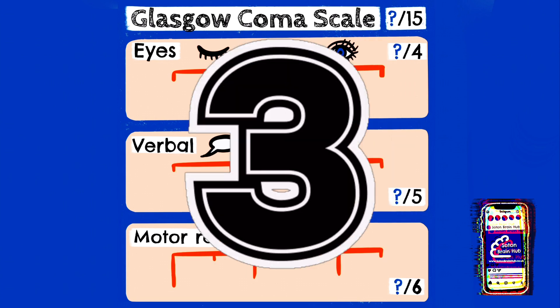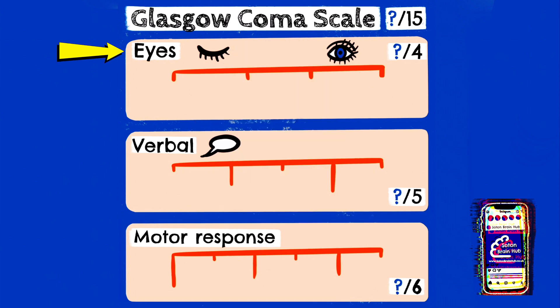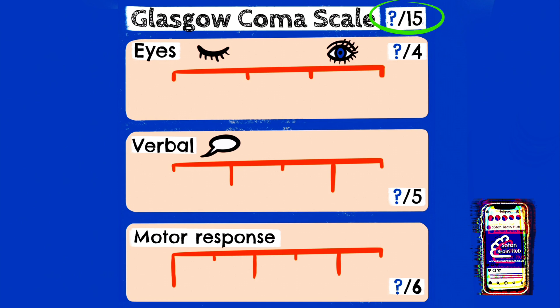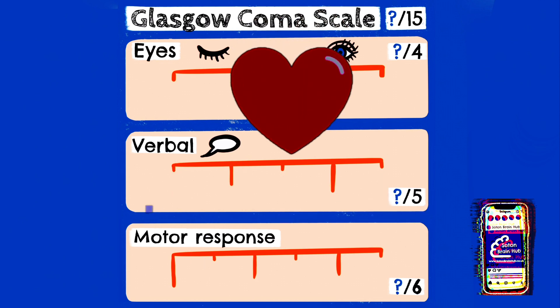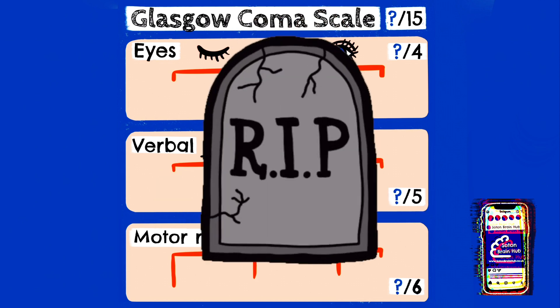The Glasgow Coma Scale assesses a person based on three components: their ability to perform eye movements, speak, and move their body. The highest possible score is 15, indicating fully conscious, and the lowest possible score is 3, which would indicate the patient is in a coma or dead.